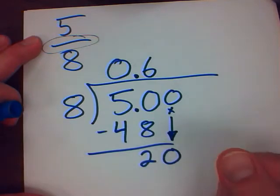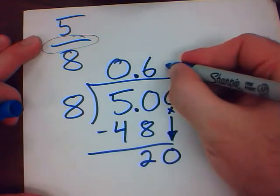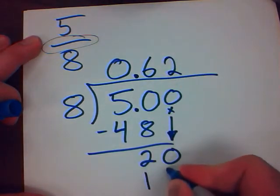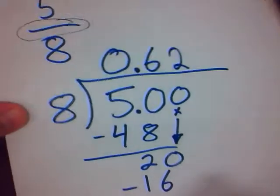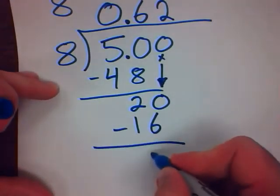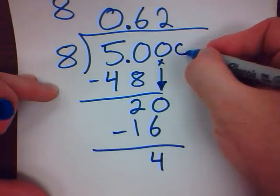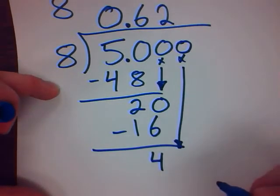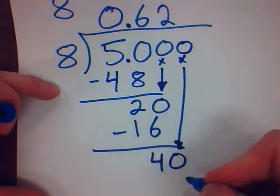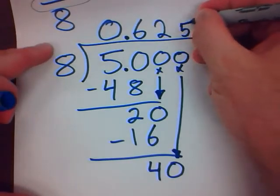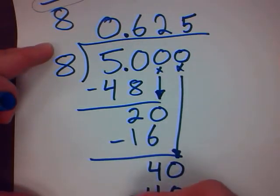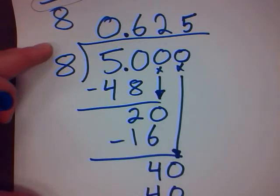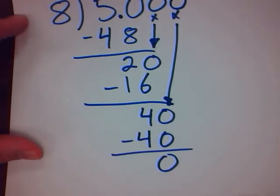8 into 20. Hmm. 3 times 8 is 24. That's too high. I'm going to go 2 times 8 is 16. Subtract. 4. 8 into 40. That's 5. Remainder 0.